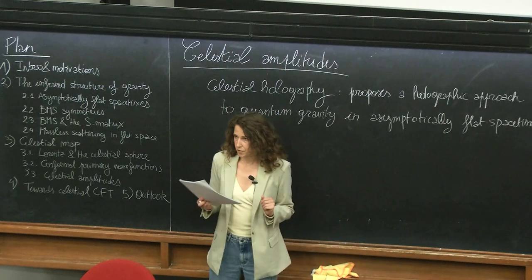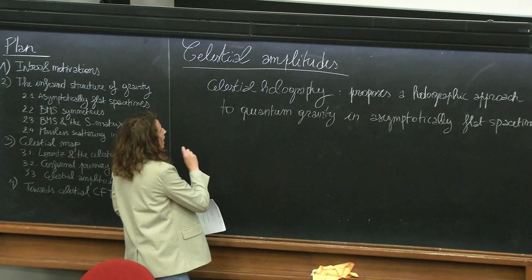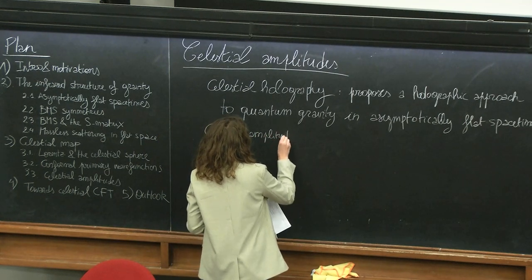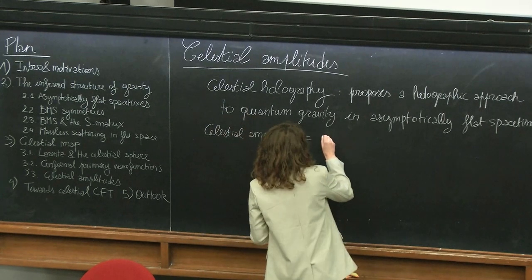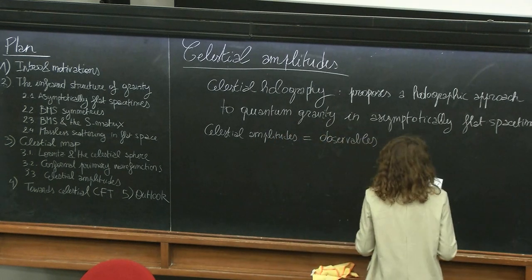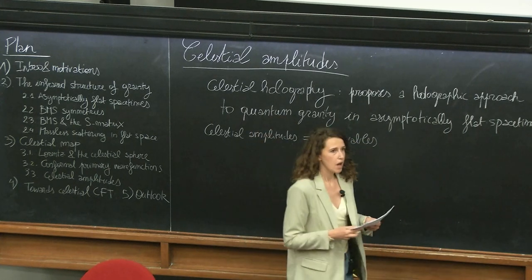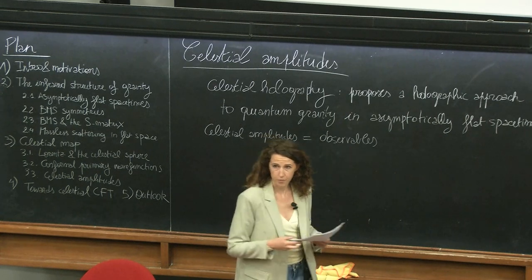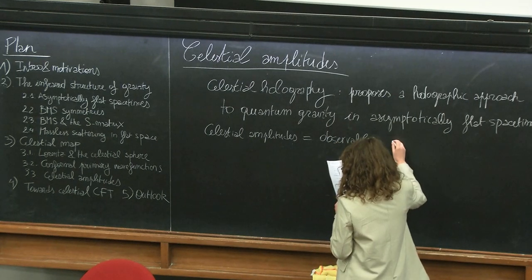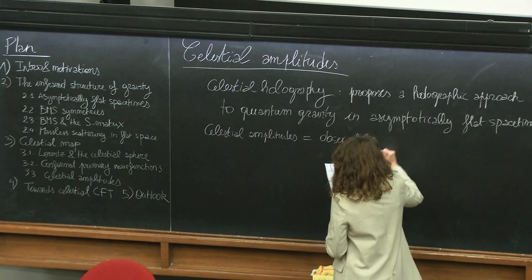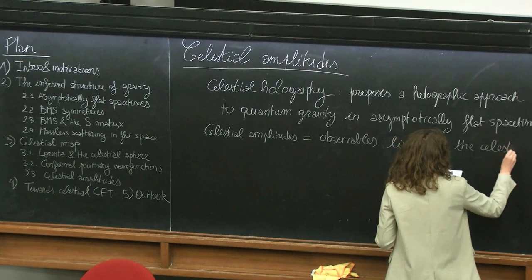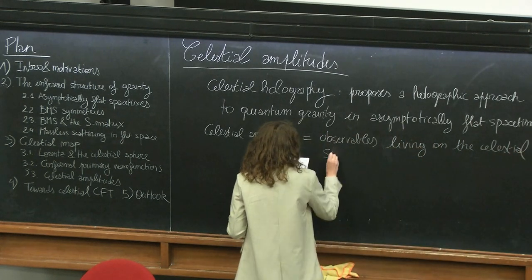It's a very precise proposal rooted on celestial amplitudes. In this context, celestial amplitudes will play the role of the observables — they will be scattering elements written in a convenient way so as to exhibit the manifest conformal transformation law under the action of the Lorentz group. They will be the observables of quantum gravity living on the celestial sphere.